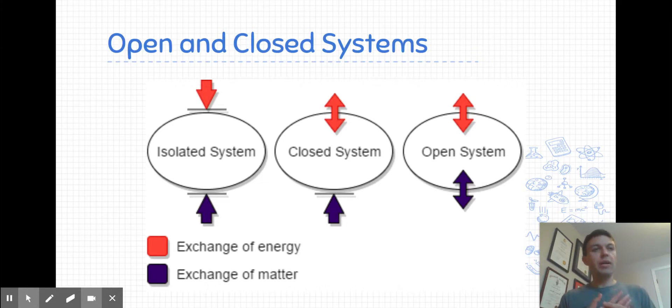An open system is one where energy can be exchanged, so heat can flow out of the system or into the system, or light can flow out of the system or into the system. But matter can also flow in and out of the system. A lot of the experiments we've done in chemistry involve open systems. Think any sort of reaction where a gas is produced and we do a splint test for hydrogen or oxygen while we're allowing the gas to escape into the surroundings.